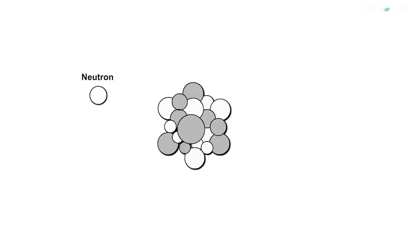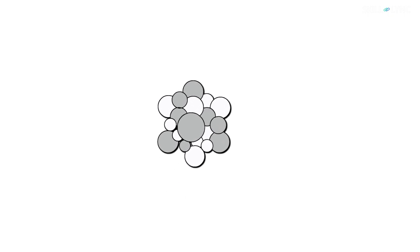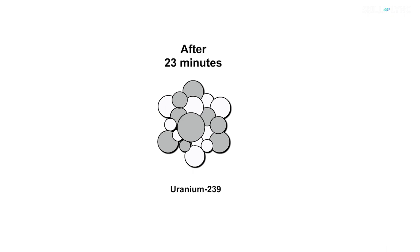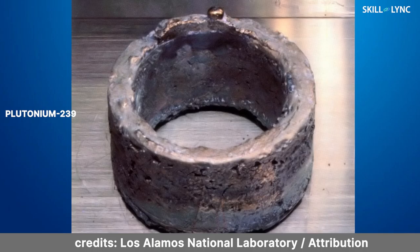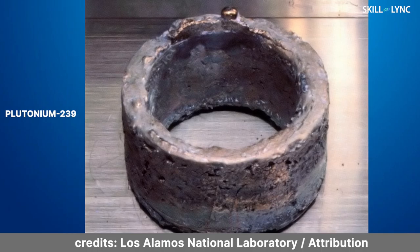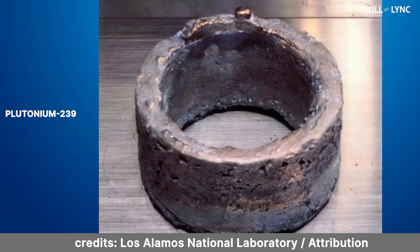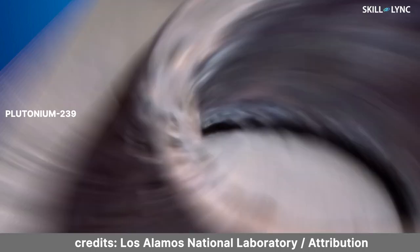However, uranium-238, on being bombarded by a neutron, transforms into uranium-239. Uranium-239 then loses an electron and transforms into neptunium-239, which by losing another electron finally transforms into plutonium-239. The plutonium-239 obtained is fissile and can be used as a fuel.